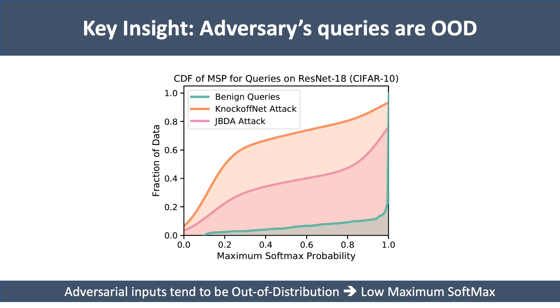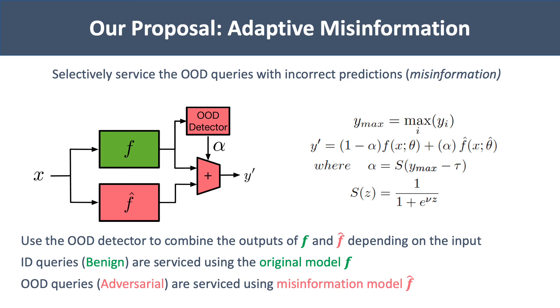Our defense leverages this insight by selectively servicing out-of-distribution queries with incorrect predictions to mislead the adversary. This prevents an adversary from learning the true predictions of the model while servicing queries from benign users correctly.